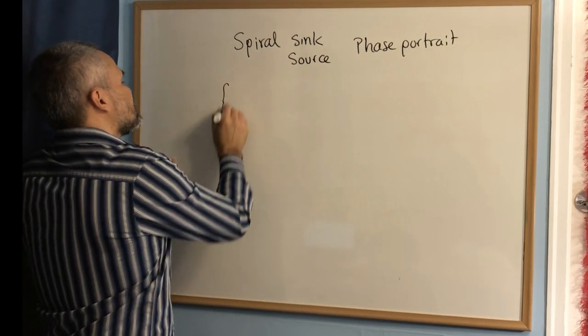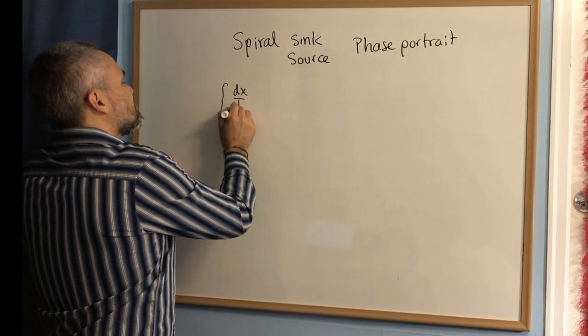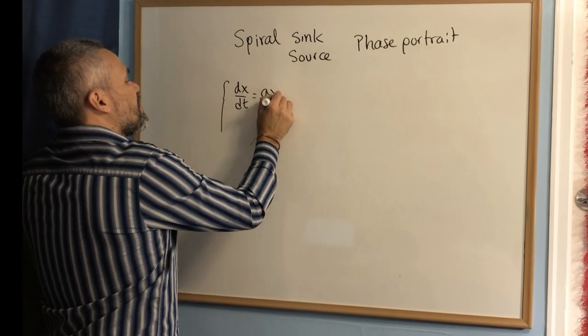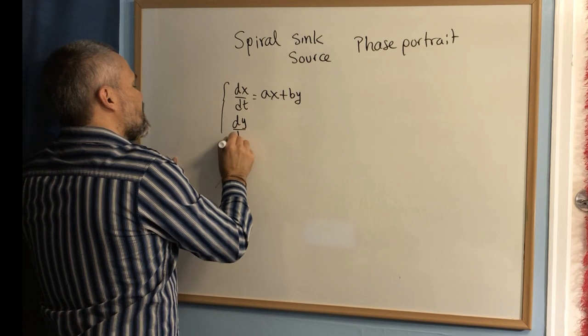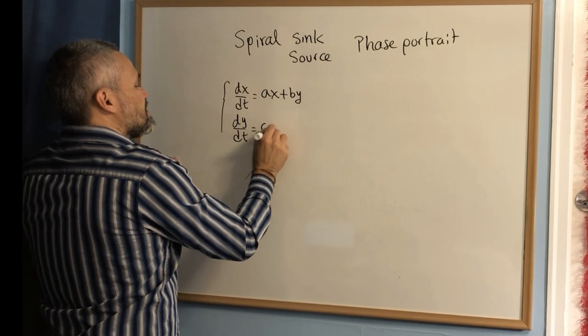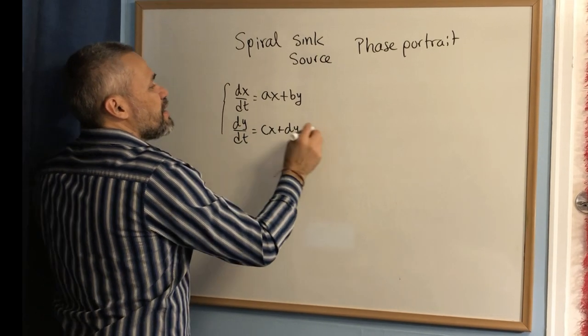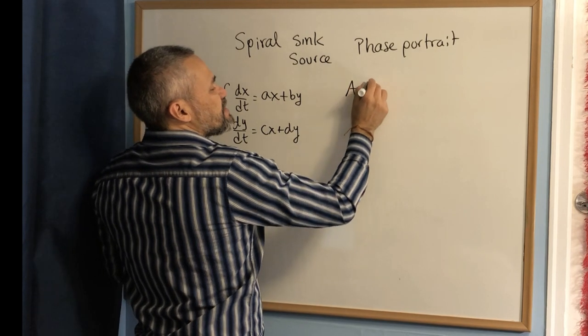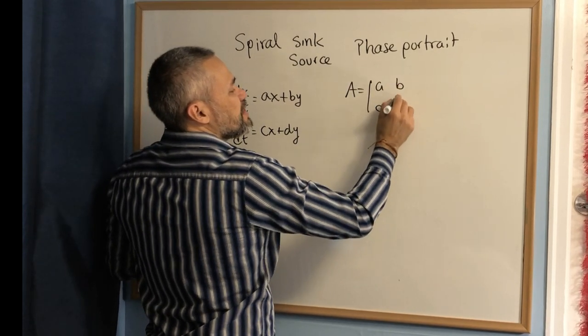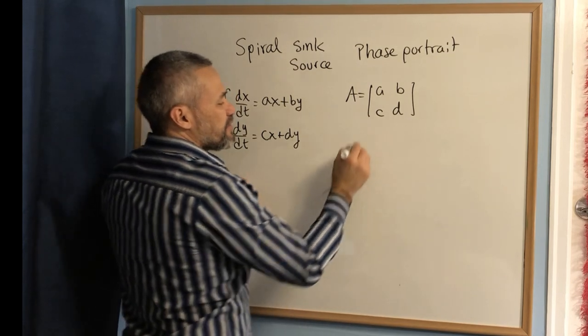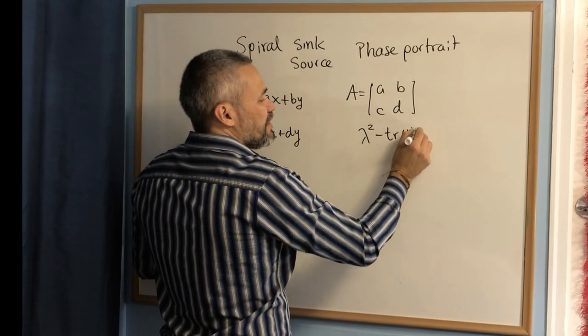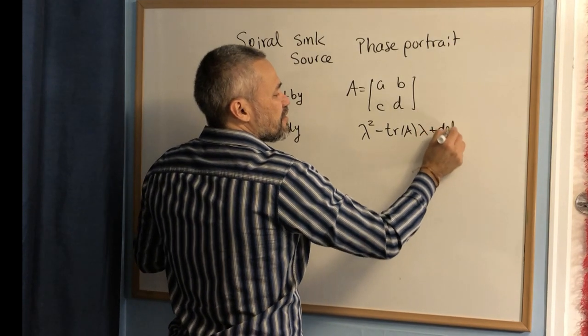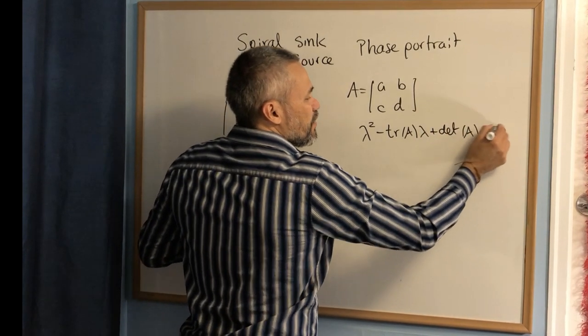We have the linear system that goes like this: dx/dt equals ax plus by, dy/dt equals cx plus dy, and the matrix of the system is [a b; c d], and the characteristic equation is lambda squared minus the trace of A lambda plus determinant of A equals zero.